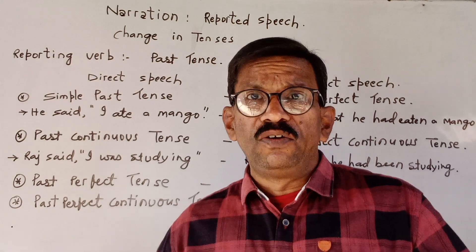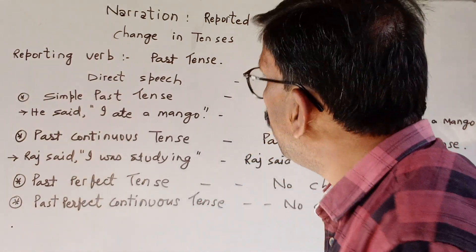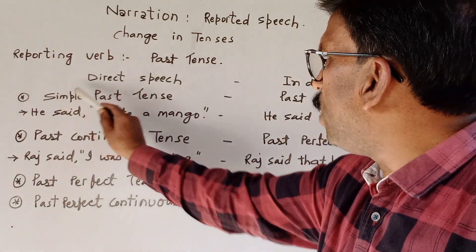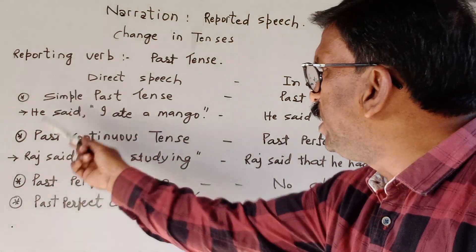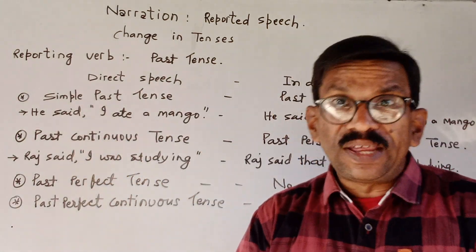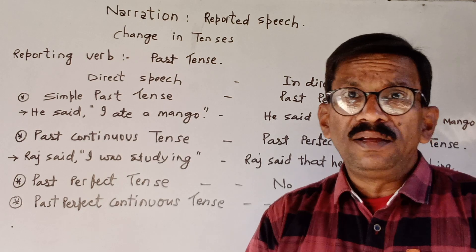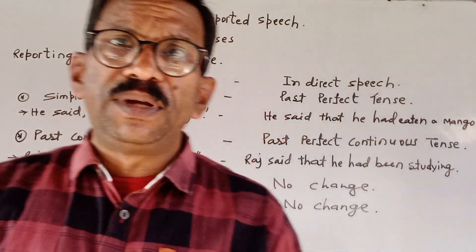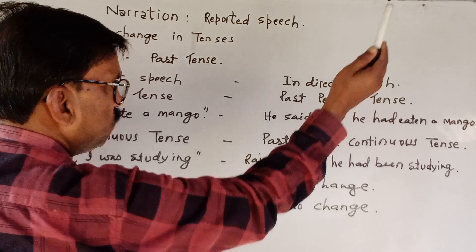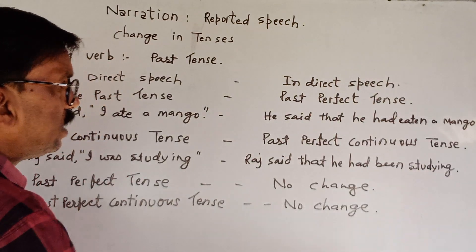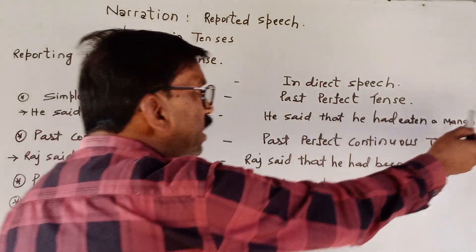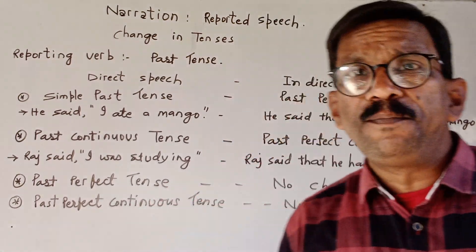Today we are going to continue with that. If in direct speech there is simple past tense, like 'He said I ate a mango,' then in indirect speech it will be in past perfect tense — like 'He said that he had eaten a mango.'